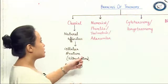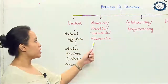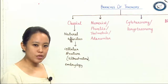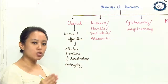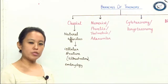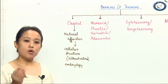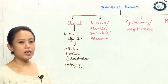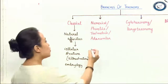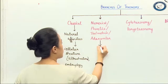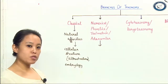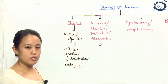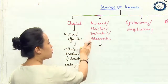Moving ahead, there is a second branch of taxonomy — numerical taxonomy, also known as phenetics, taximetrics, or Adansonian taxonomy. These are based on all the evidences provided by previous scientists. This is the second branch: numerical taxonomy.